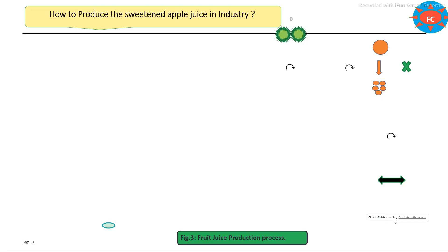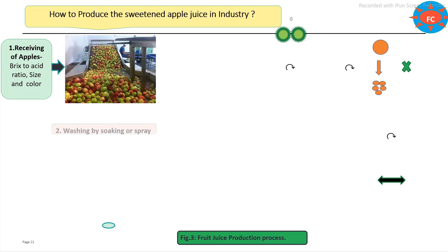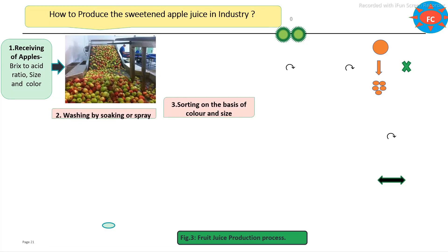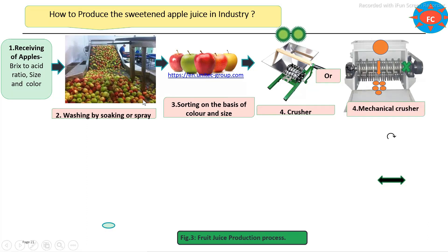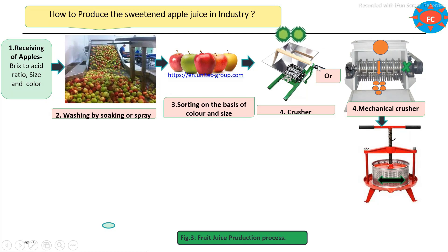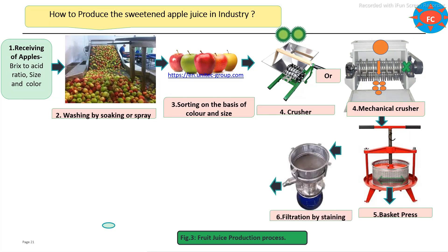The main steps involved in the production of sweetened apple juice: first, receiving of the apples, during which their content, mixed acid ratio, and maturity are measured based on size and color. Pre-processing steps include washing, sorting, and grading. High quality apples are then selected for juice extraction. First the crushing process — different types of crushers are used for size reduction. Next is the mechanical pressing process using a basket press or hydraulic basket press, either manual or hydraulic. The crushed apples are pressed to extract the fruit juice, which is then properly filtered to obtain apple juice.